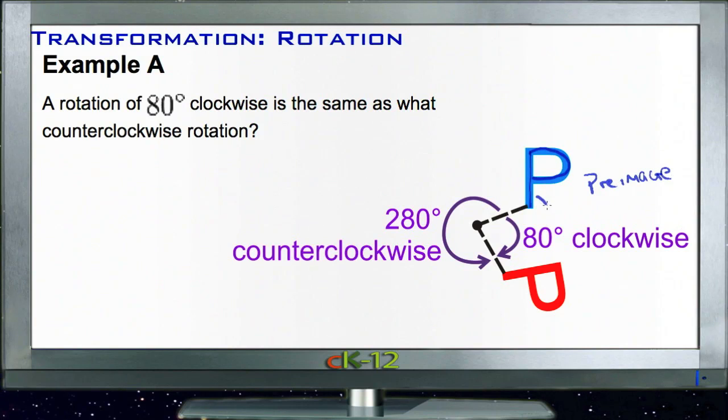and we rotate it 80 degrees clockwise to get our new P, which is our image, or P prime, rotating it 80 degrees is the same as rotating it counterclockwise 280 degrees.